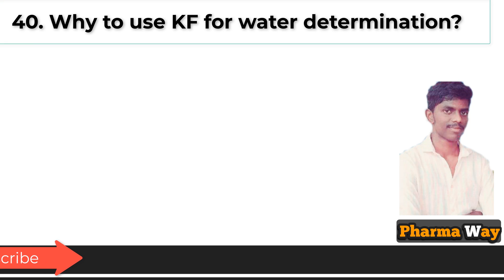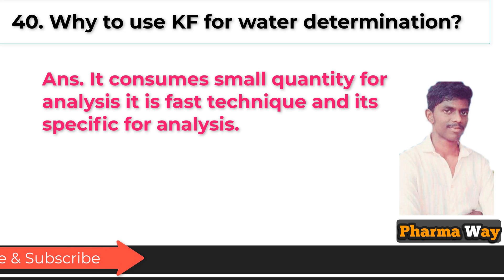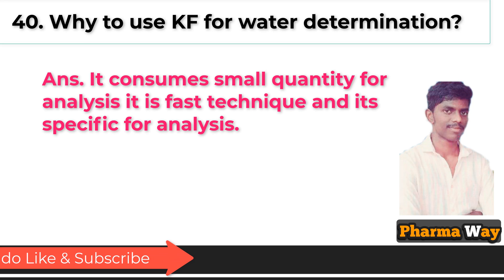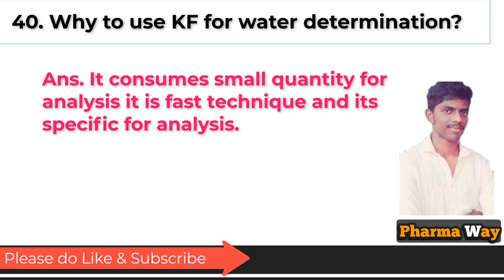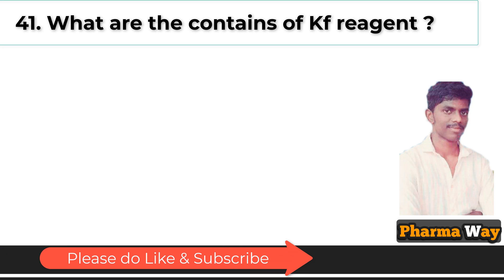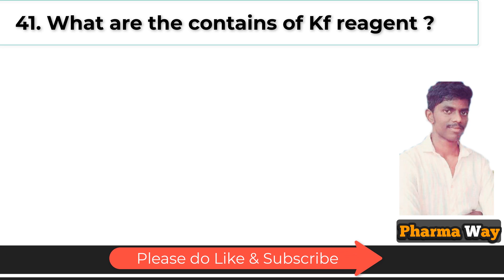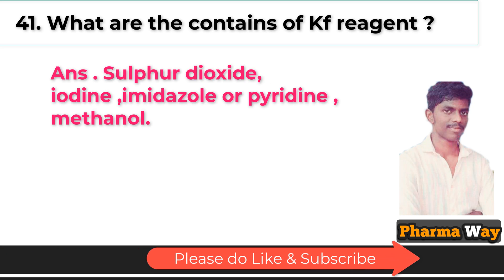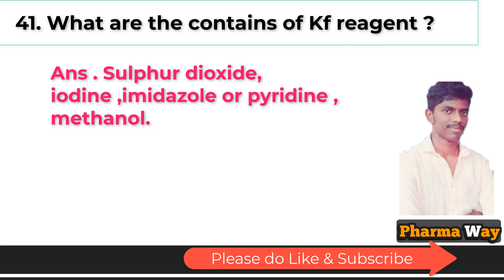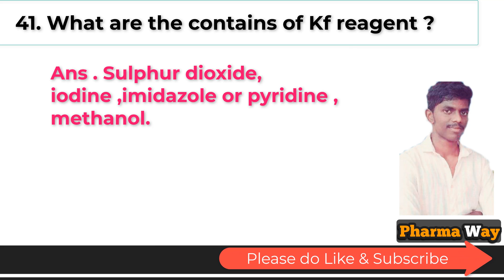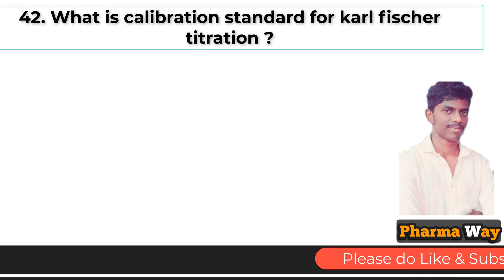Why use KF for water determination? Answer: It consumes a small quantity for analysis, it is a fast technique, and it is specific for water analysis. What are the contents of KF reagent? Answer: Sulfur dioxide, iodine, imidazole or pyridine, and methanol.